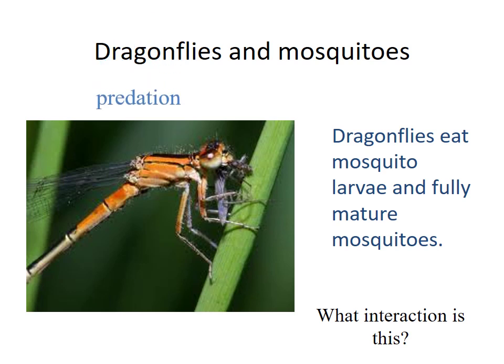Predation — the dragonflies eat the mosquitoes, so the dragonflies are the predator and the mosquitoes are the prey.